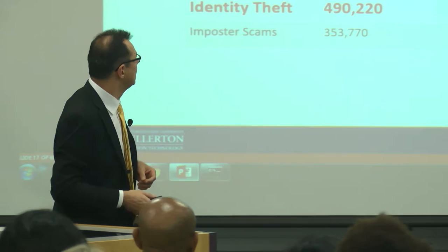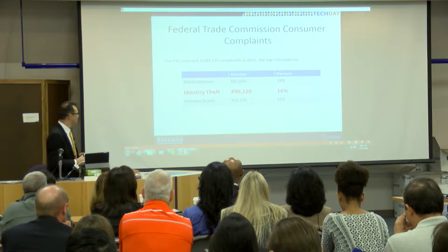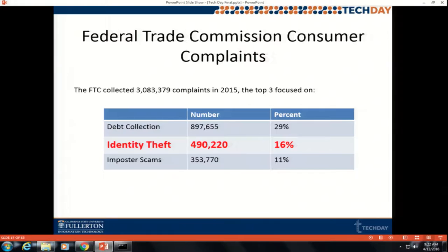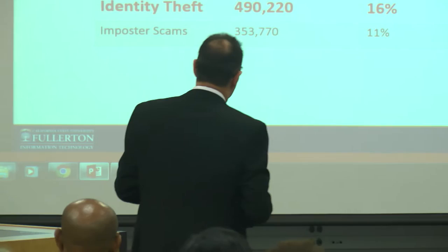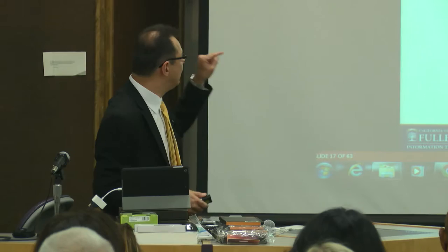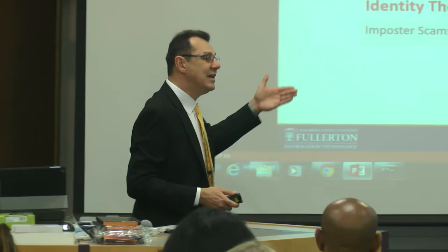The Federal Trade Commission publishes a top three crimes or complaints about users. In 2015, the top three were: identity theft, imposter scam, and debt collection. Identity theft was 490,000 incidents in 2015 in the U.S. — 490,000 identity theft cases, over 16%. This number, with debt collection actually going up — if you look at previous years, identity theft was number one.